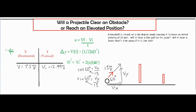I used the cosine function for the adjacent side — cosine equals adjacent over hypotenuse — so the adjacent side is VX and the hypotenuse is the main velocity of 15. I did something similar for the Y component using sine, since sine equals opposite over hypotenuse, and then multiplied both sides by 15 to get both components.